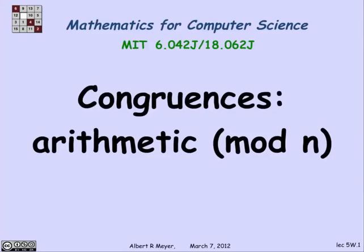The idea of congruence was introduced to the world by Gauss in the early 18th century. He's responsible for some work on magnetism also. This idea, after several centuries, remains an active field of application and research. In particular, in computer science, it's used significantly in crypto, which is what we're going to be leading up to in this unit. It also plays a role in hashing, which is a key method for managing data in memory.